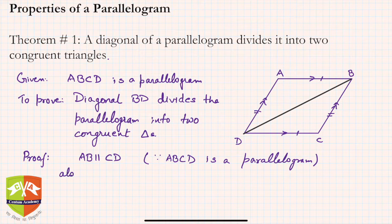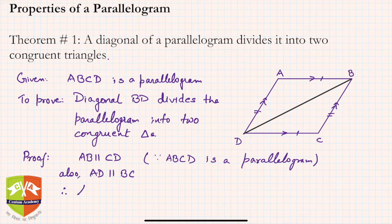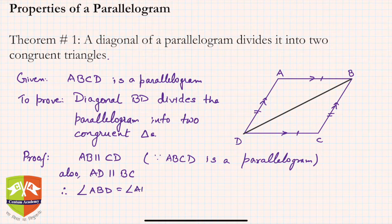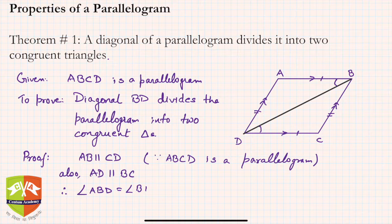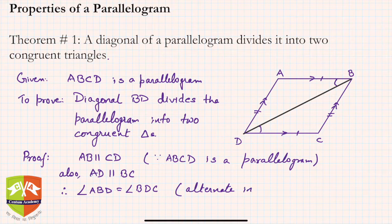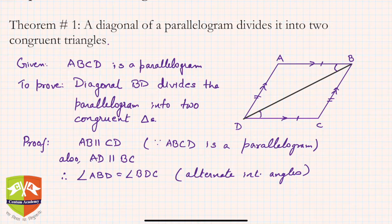Also, AD is parallel to BC, for the same reason. Therefore we can write: angle ABD is equal to angle BDC, by alternate interior angles. You will soon see why we require all this.